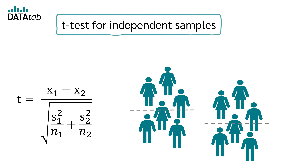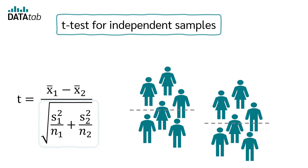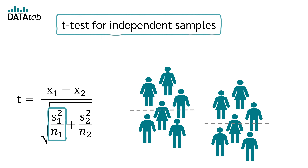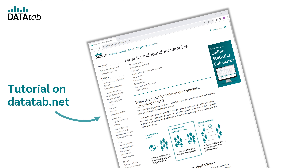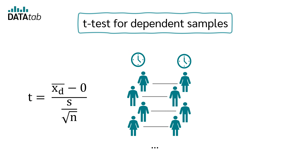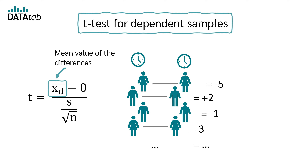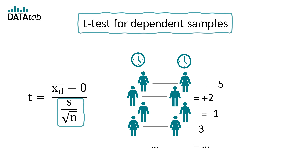In the independent samples t-test, we calculate the difference between the two sample means. To calculate the standard error, we need the standard deviation and the number of cases from both samples. Depending on whether we can assume equal or unequal variance, there are different formulas for the standard error. In a paired samples t-test, we only need to calculate the difference between the paired values and compute the mean from that. The standard error is then the same as for a one-sample t-test.